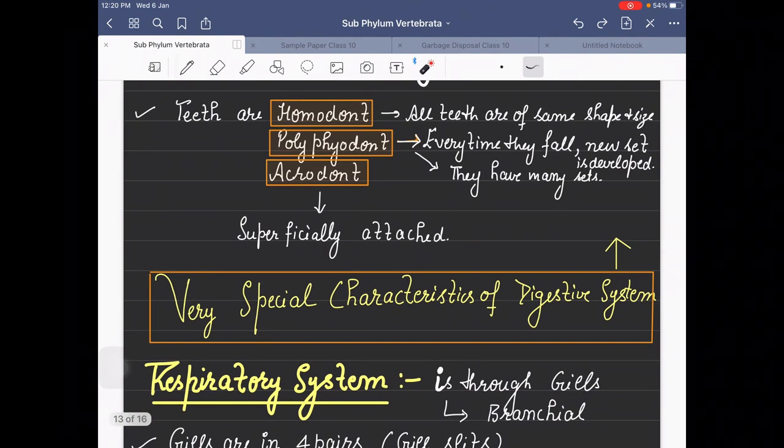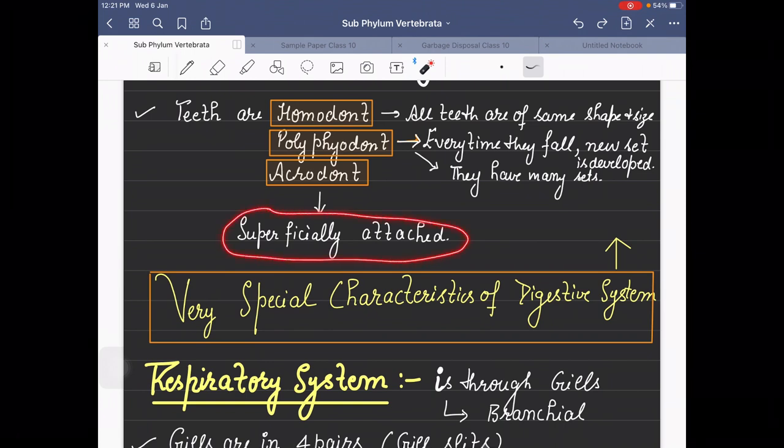Teeth are very specific. You have to understand this carefully because we will discuss them in Amphibia also. Teeth are homodont, polyphiodont, and acrodont. Homodont means all teeth are of the same shape and size. Polyphiodont means every time they fall, a new set is developed, meaning they have many sets.